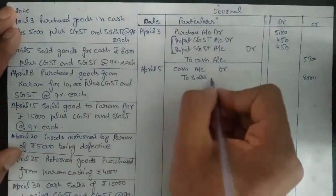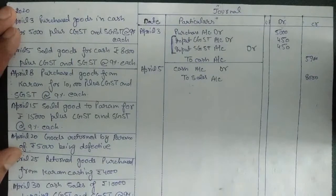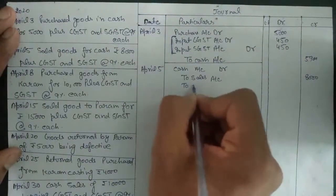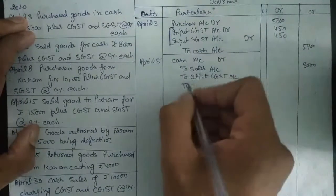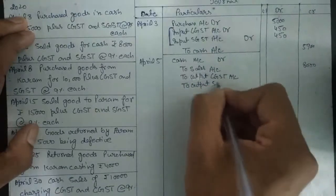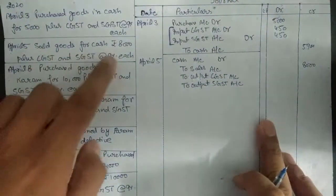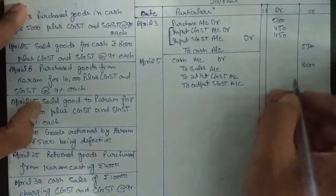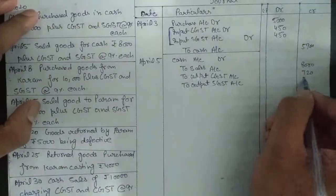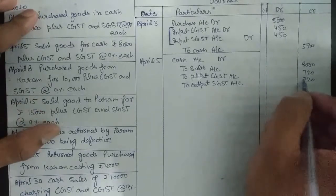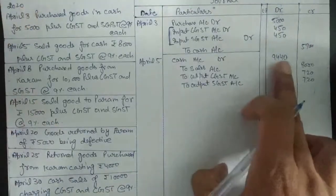Earlier when purchasing we were paying GST; now in case of sale we will receive GST from the purchaser. So we also credit Output CGST account and Output SGST account. The GST to charge from our purchaser is 9% of the gross value of ₹8,000, which is ₹720 to the central government and ₹720 to the state government. The total we will charge from the customer is ₹9,440.